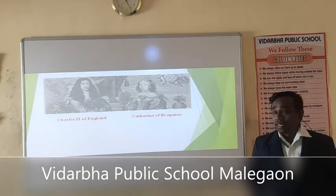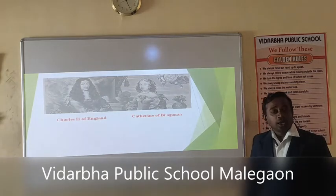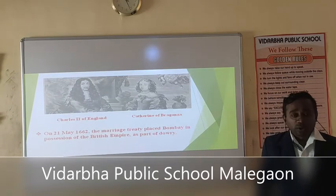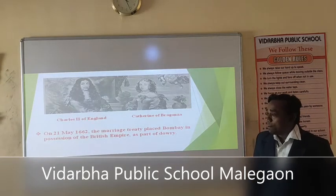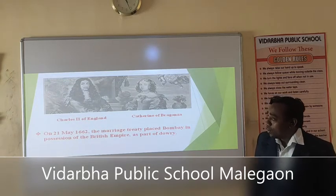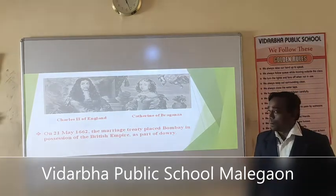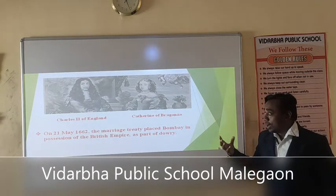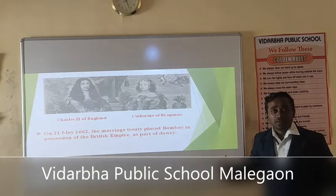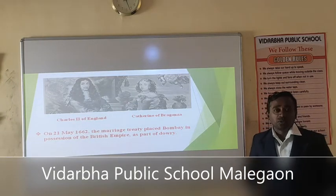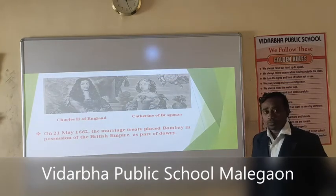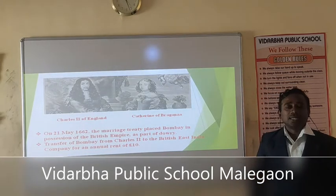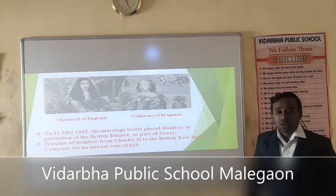The marriage between Charles II of England and Catherine of Braganza also played its part in shaping our history. Because on 21st May 1662, a marriage treaty was signed in which Bombay was handed over to the British Empire as a dowry. So in this marriage alliance, Bombay — which was basically seven islands — was given to Charles II of England as dowry. Charles II then rented those islands to the British East India Company at an annual rate of £10,000.